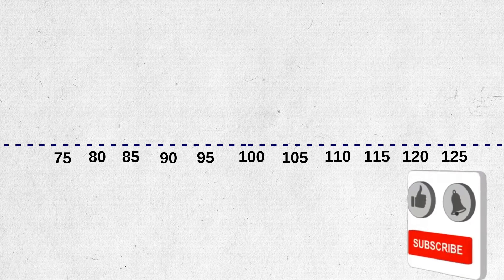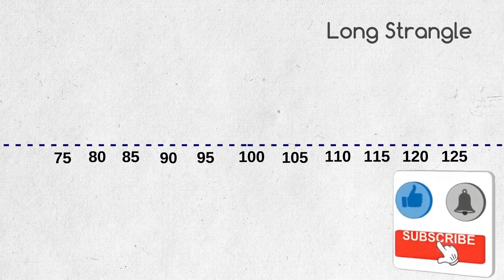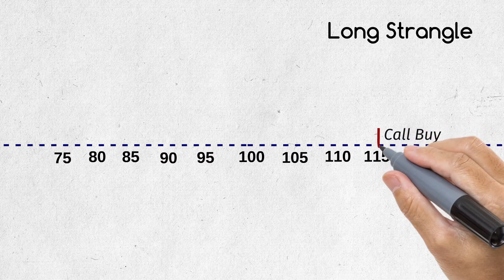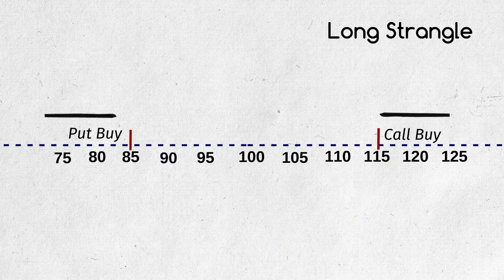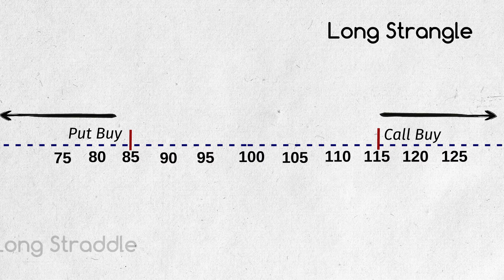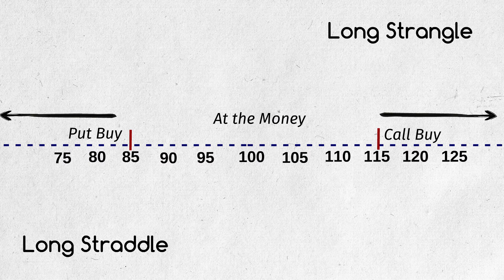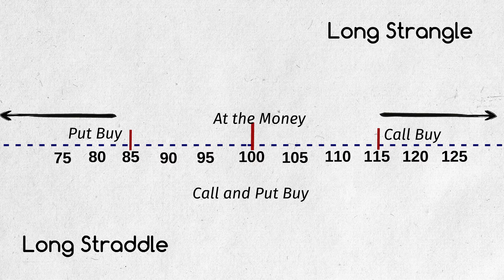What is the aim of long strangle again? To capture the upside move either side, we buy one out of the money call option and one out of the money put option and wait for the big movement in the price which goes out of the breakeven point and earns money. As both are out of the money options, we require less capital. But in the long straddle, we buy both at the money call option and at the money put option. This is the only change between long strangle and long straddle: the at the money and out of the money.